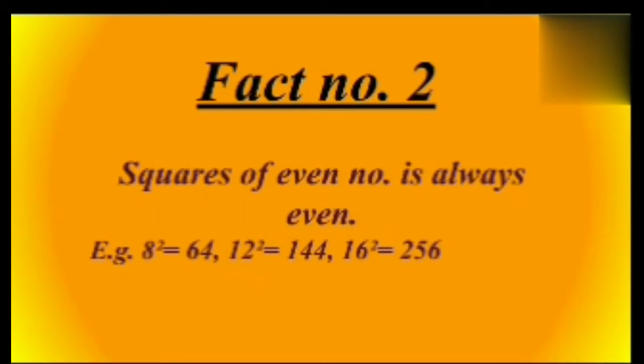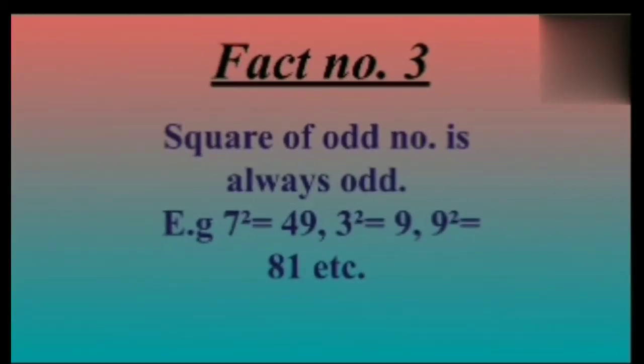Fact number two: Squares of even numbers are always even. For example, 8 squared equals 64, 12 squared equals 144, and 16 squared equals 256.